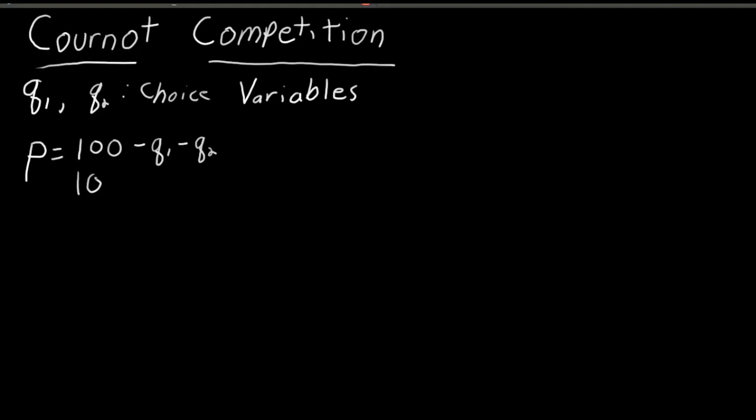We can see, for example, if firm one chooses one and firm two chooses three, it's 96. That's the price. If firm one chooses 10 and firm two chooses 20, we see that the price is now 70. Okay, so this is how the price is determined.